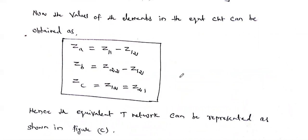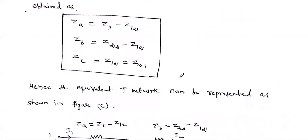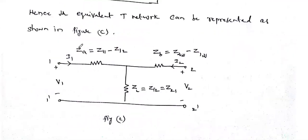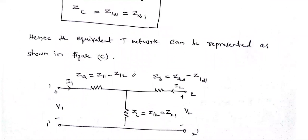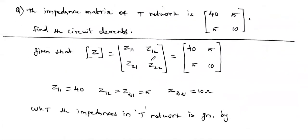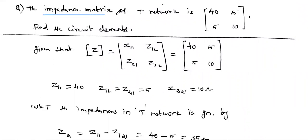Using these formulas we are going to solve a problem. You may get problems of two types: either the Z-parameter is given and you have to draw the T-type network, or the T-type network is given and you have to find the Z-parameter. The problem states: the impedance matrix of the T-network is [40, 5; 5, 10]. Find the circuit elements.